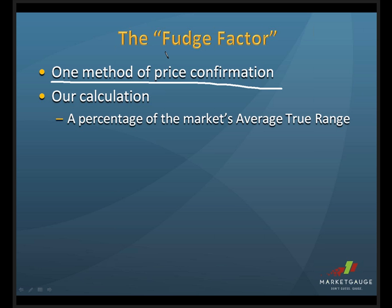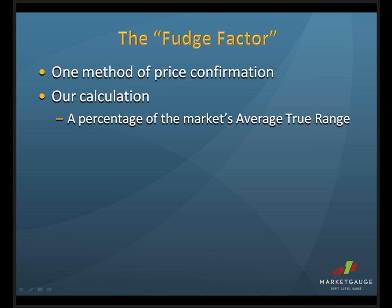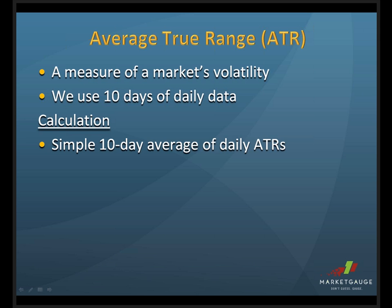The way that we figure out price confirmation, or the fudge factor, is that we use a percentage of the market's average true range. I'm going to take this opportunity to explain in detail what the average true range is.